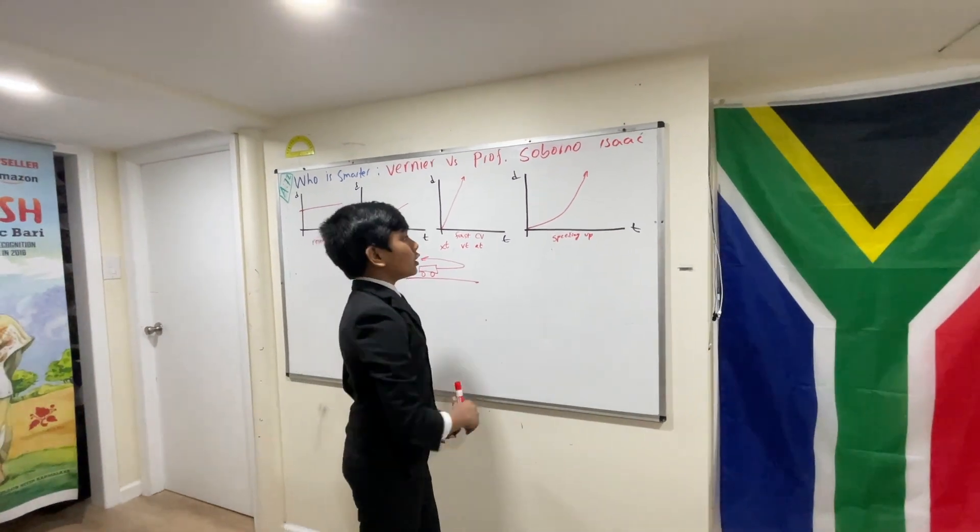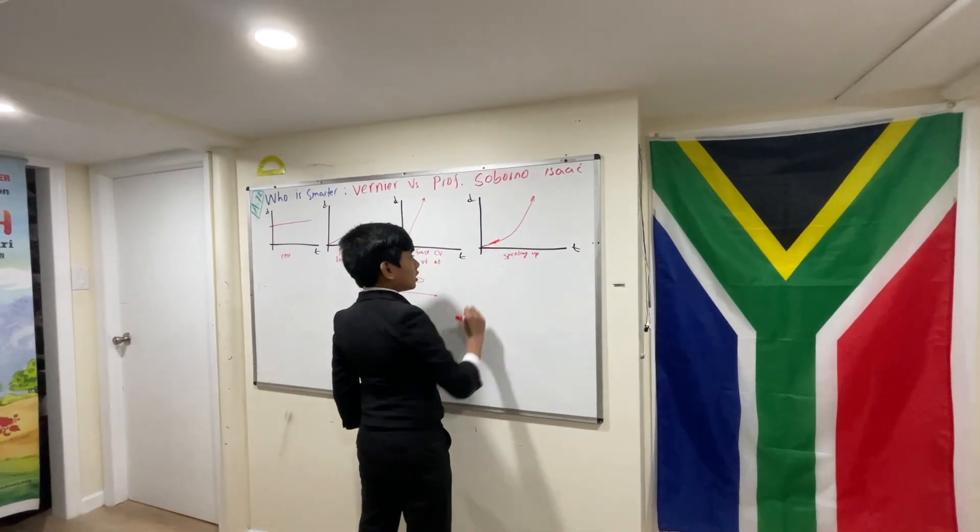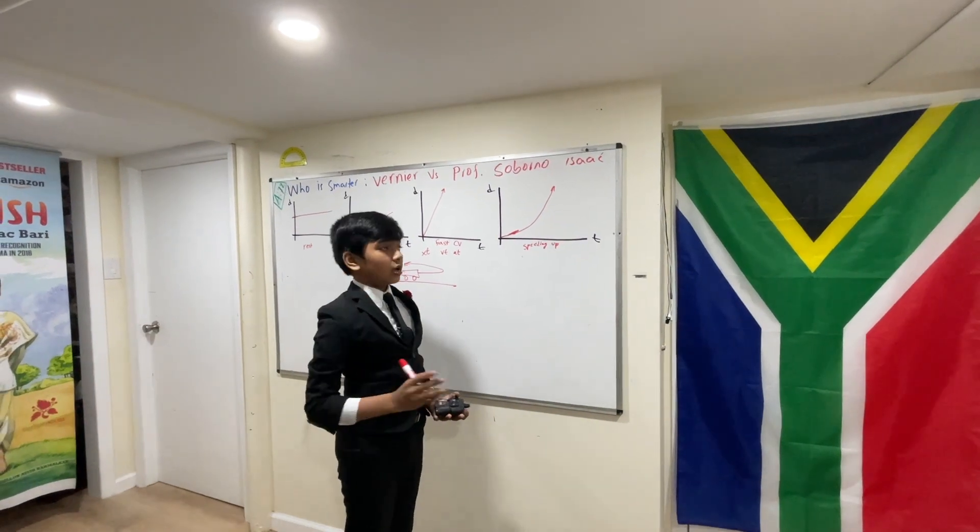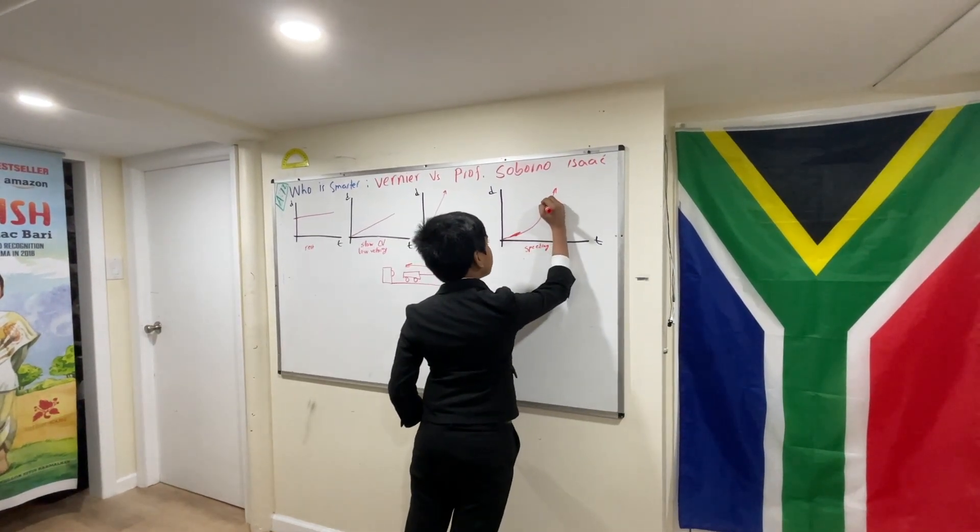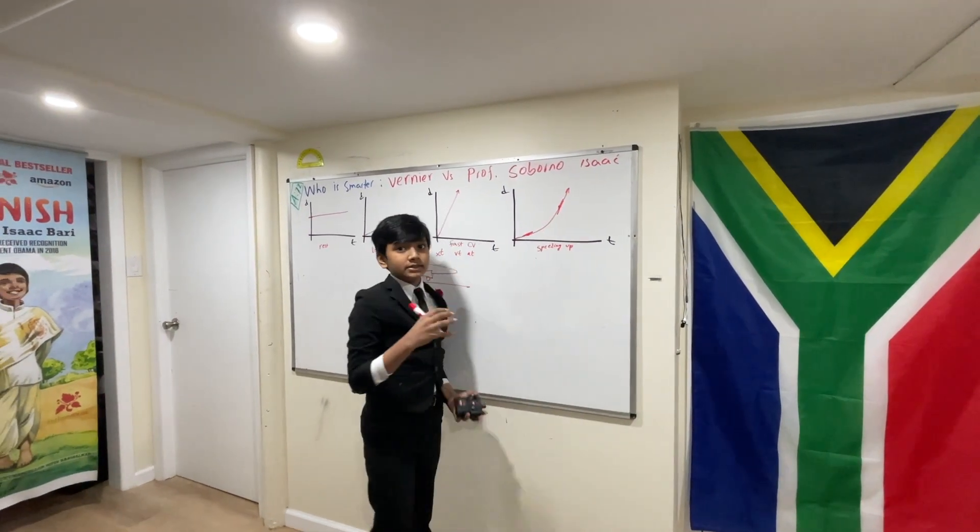Well, think of the slope at different points. At this point, it's a low slope because there is a low velocity. And at this point, later, it's a high slope because there is a high velocity.